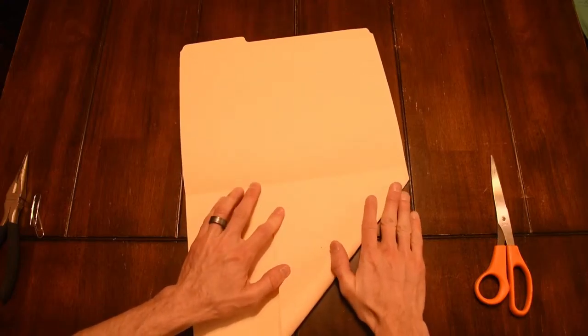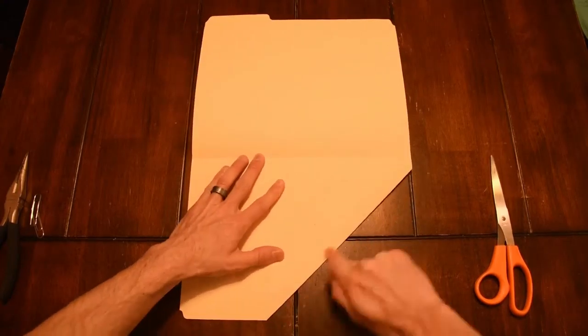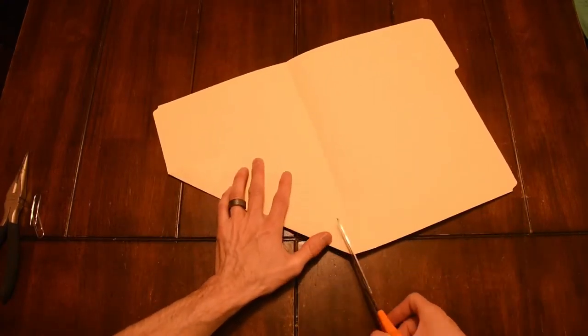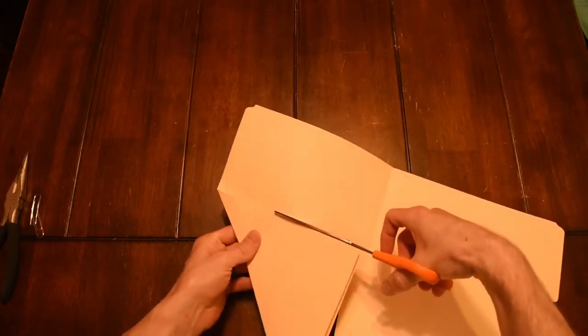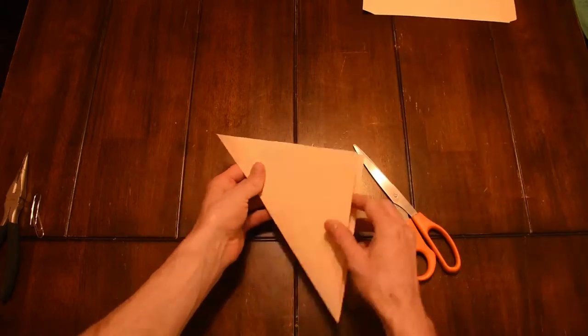Now I'm folding my folder diagonally and lining up the opposite edge here with one of those creases. You could also just line it up with the opposite edge of your material. And now I'm cutting along the edges of my fold here and this will give me a perfect square.